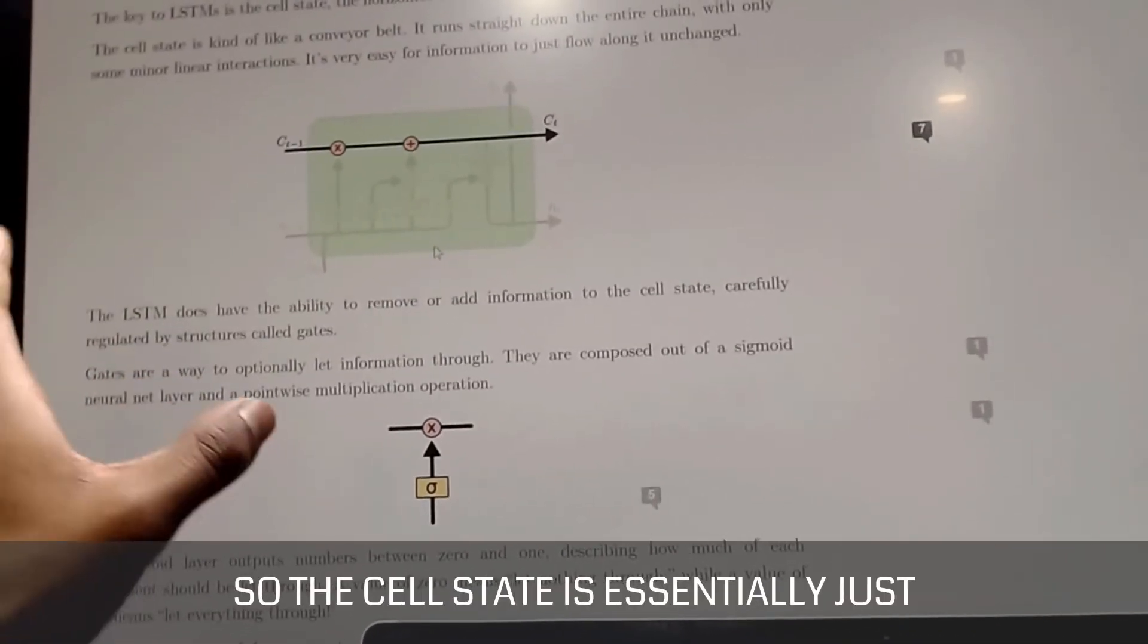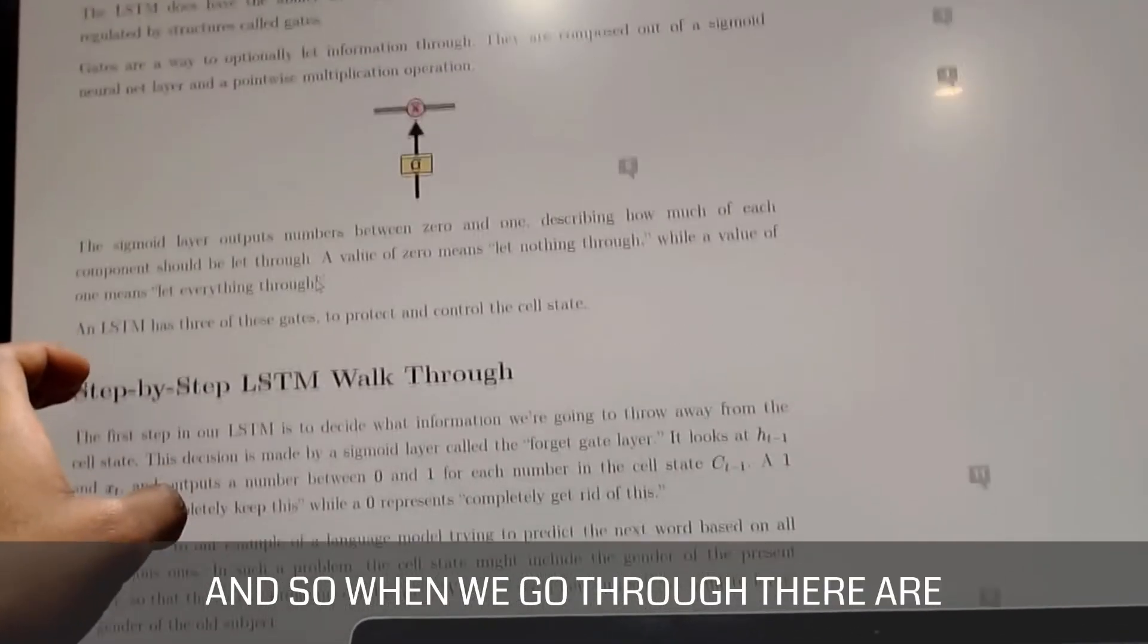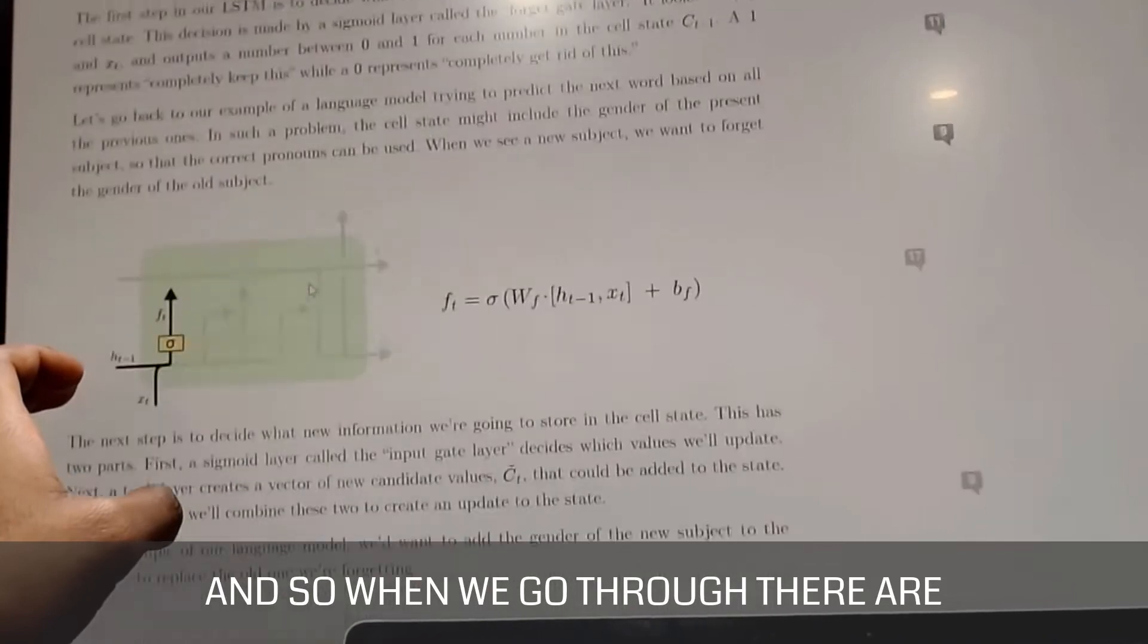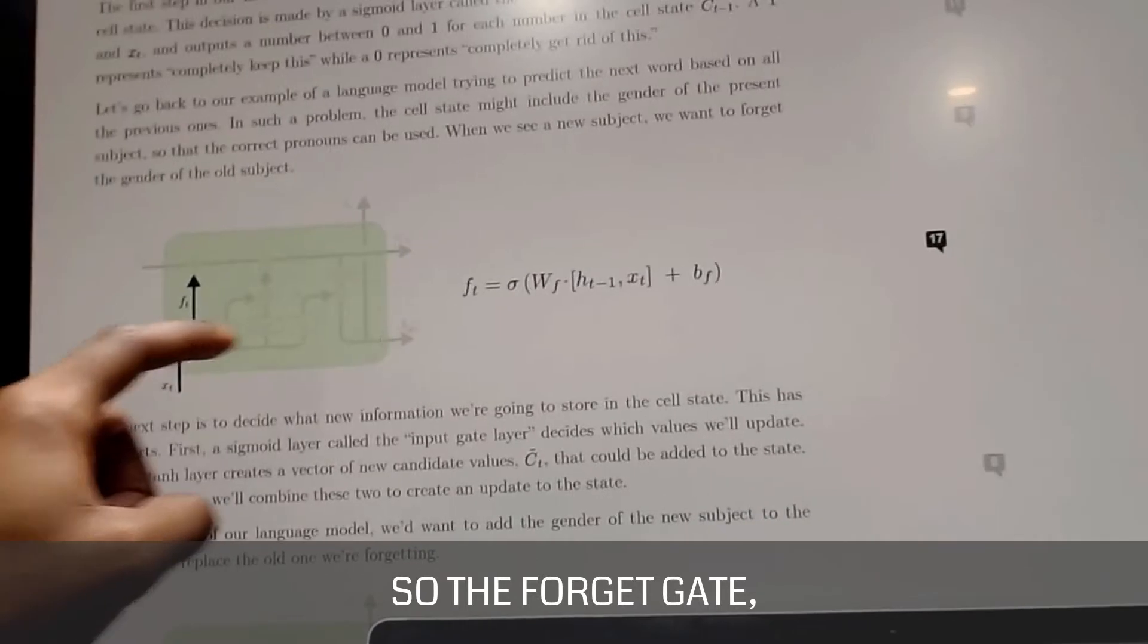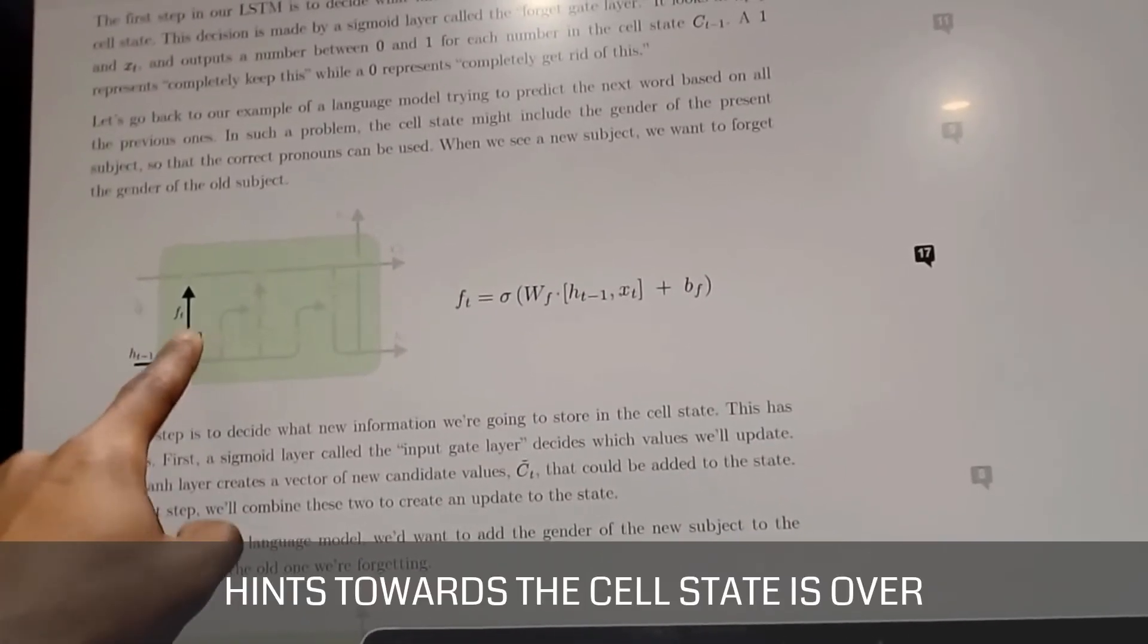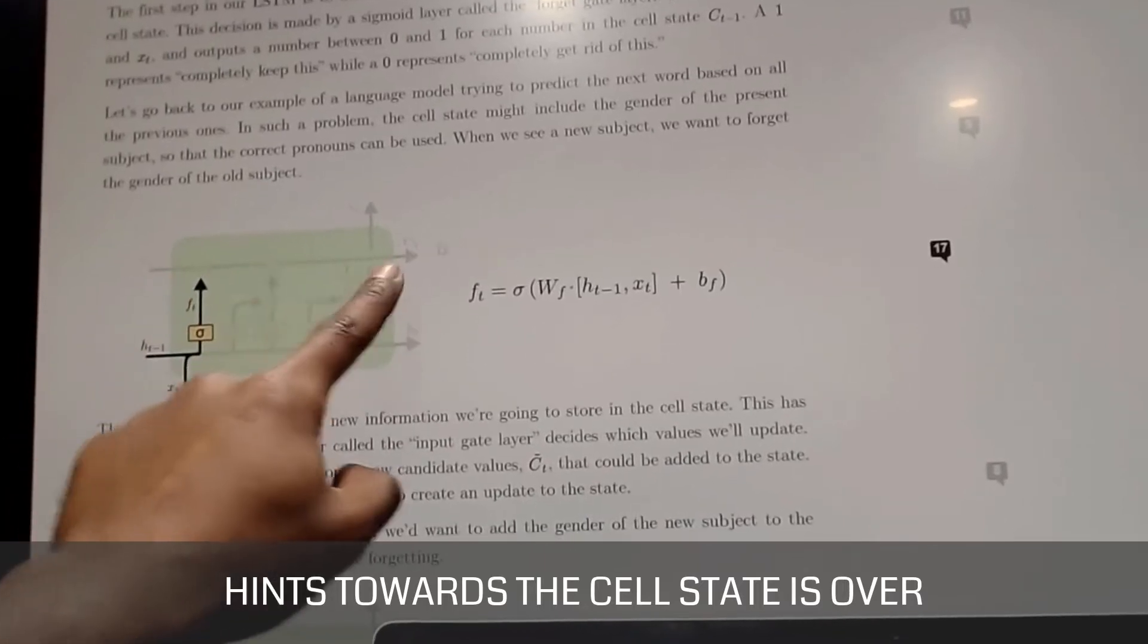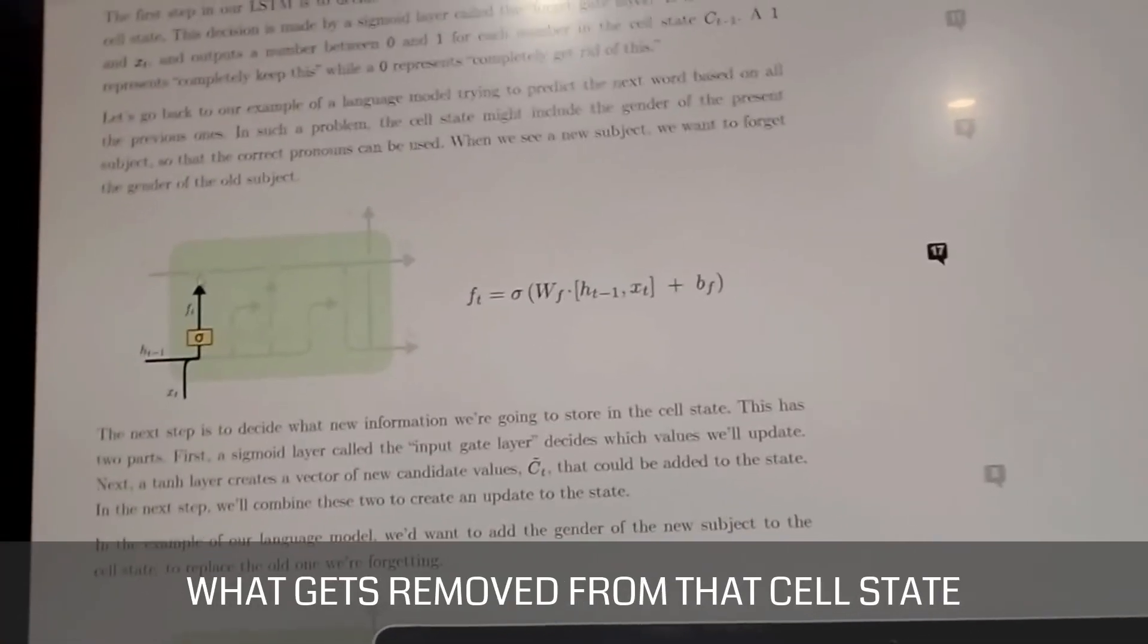So the cell state is essentially just the memory for LSTMs. And so when we go through, there are a few things that get added. So the first one is a forget gate. So the forget gate, just as its name hints towards, the cell state is over here.